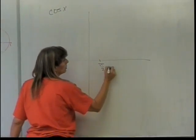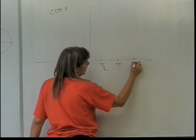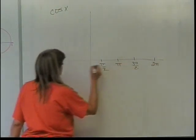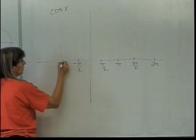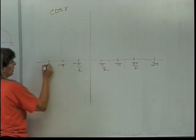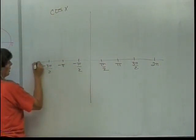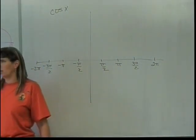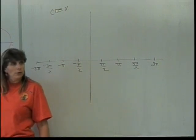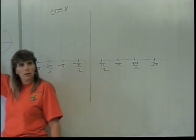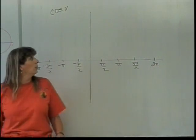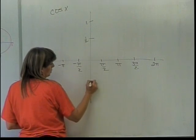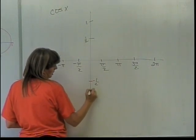The x-axis is labeled with pi over 2, pi, 3 pi over 2, and 2 pi going in the positive direction, and negative pi over 2, negative pi, negative 3 pi over 2, and negative 2 pi going in the negative direction. Just like with the sine function, I never get any higher than 1 for my x-coordinate as I look around the circle, and I never get any lower than negative 1. So I only have to go up to 1 and down to negative 1.